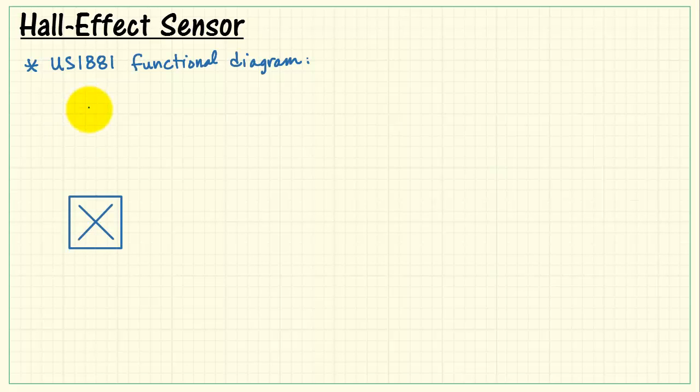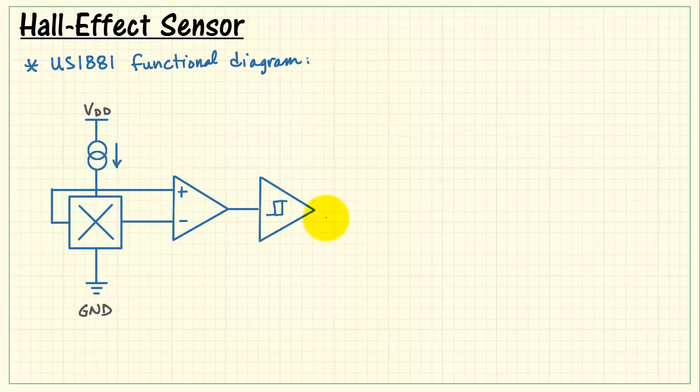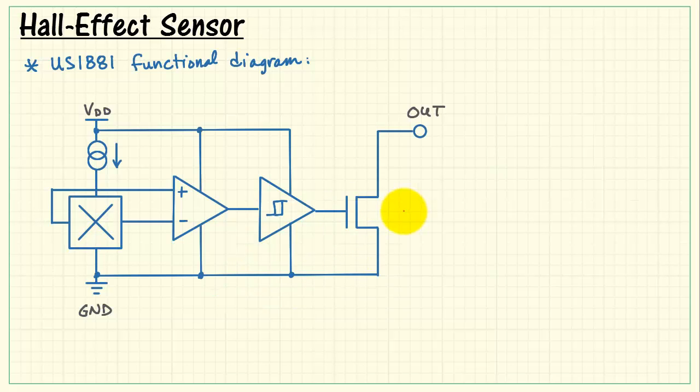Now let's take a look at the functional diagram of the US1881. We have a Hall Plate fed by a constant current source from our supply voltage down to ground. Take a look at amplifying that small voltage on the sides of the Hall Plate, passing that through a Schmidt trigger, which gives us some immunity to noise and other crossover effects as we switch the magnetic field. And then finally, the 1881 has an open drain style output. That means we need to use an external pull-up resistor eventually.